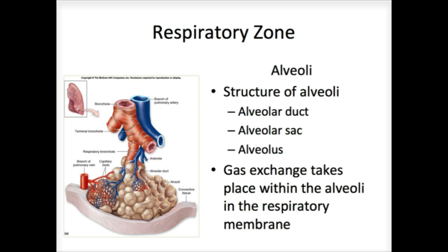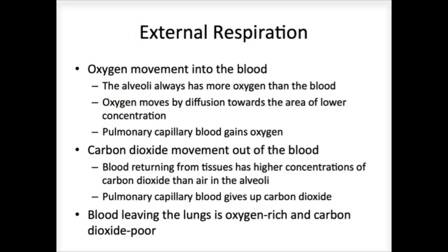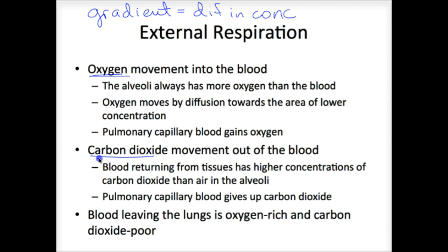Going back to the structures of the respiratory system, remember that the alveoli are the terminal component of the bronchioles. The alveoli are these sac-like structures, and notice they are completely surrounded by capillaries. Your lungs, like your liver and other parts of your body, are highly vascularized because the sole purpose of the lungs is to get O2 in and CO2 out. In order to do that, you have to maintain a gradient — a difference in concentration of oxygen and CO2.